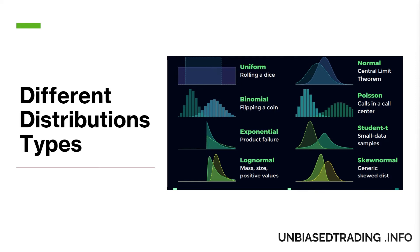Moving on to log normal probability distribution — this one is different from the normal distribution because the values are positively skewed instead of symmetrical. It's perfect for analyzing values that don't go below zero but have infinite positive potential, such as oil reserves, stock market prices, and real estate property prices. Lastly, we have the triangular probability distribution, which is about defining the minimum, most likely, and maximum values. Values in the most likely category have the highest potential of occurrence, and this distribution is ideal for expressing product inventory levels and past sales history per unit of time.